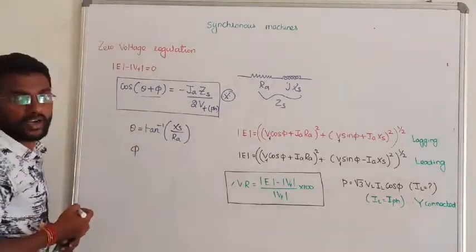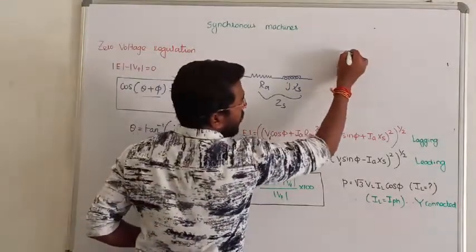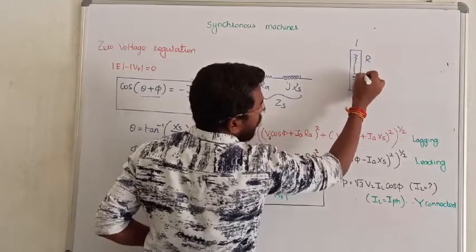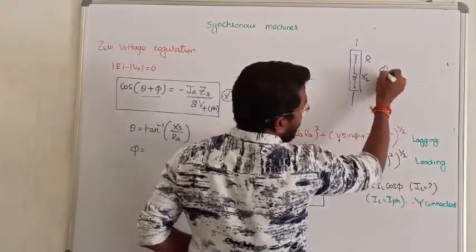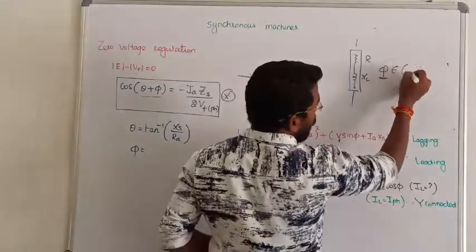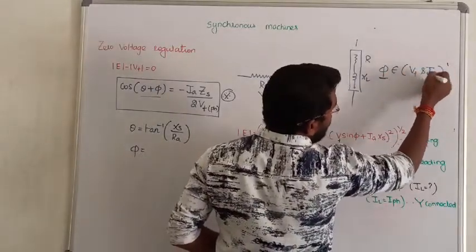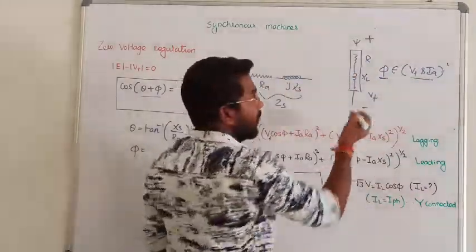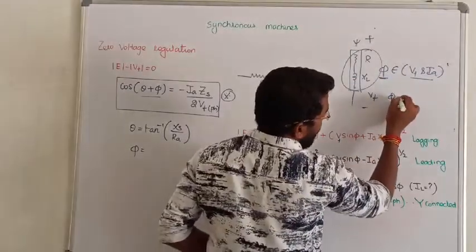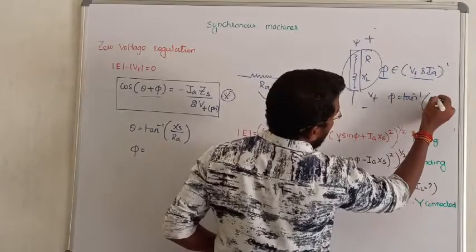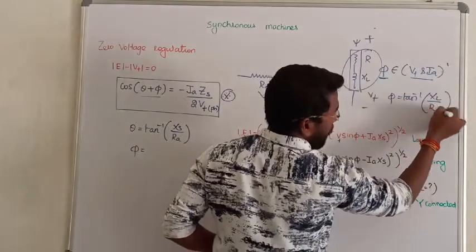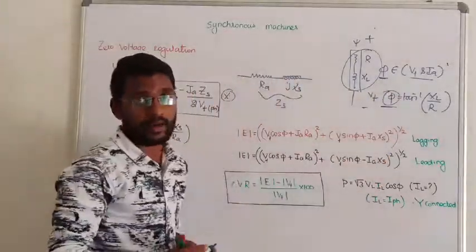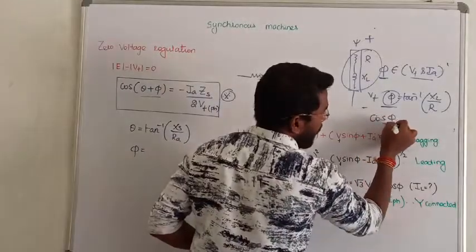This impedance angle becomes tan inverse of X_s by R_A. φ denotes the external power factor, that is the load. Suppose the load is an R-L load. If you are in that case, then φ is the external power factor.